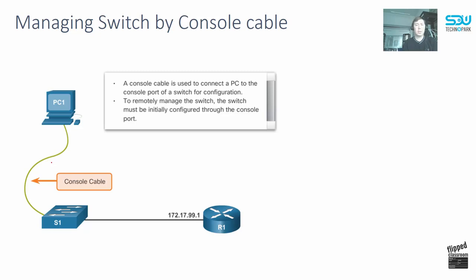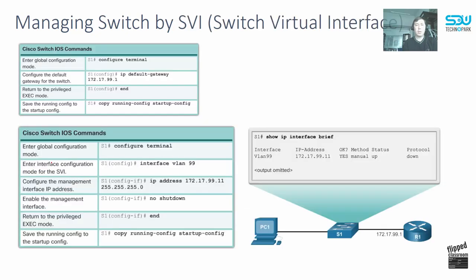The main cases where the console cable is used: first, initial configuration when there is no IP address set on the switch; second, when the switch has problems or is damaged, or when you want to restore the password. In most other cases, you will use management by IP — either Telnet or SSH.